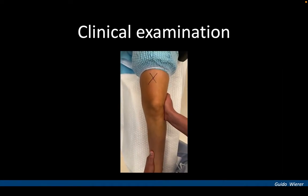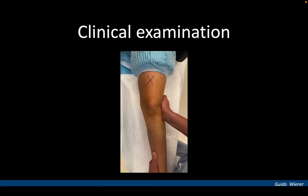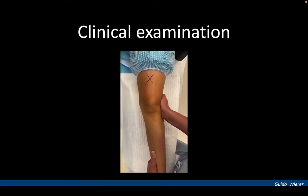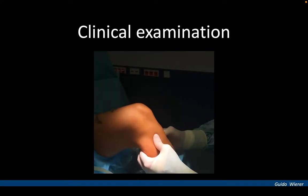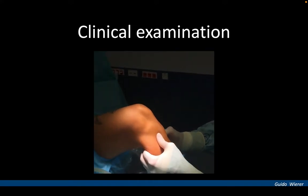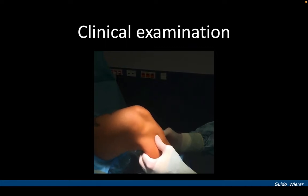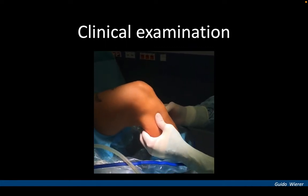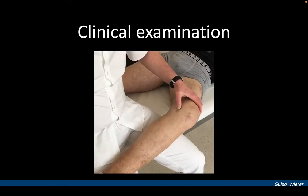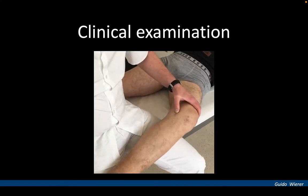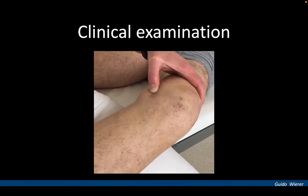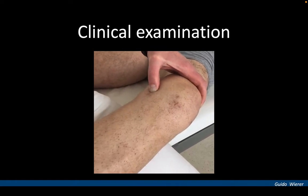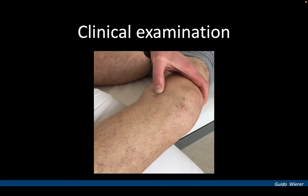In this example, valgus instability is observed in 20 degrees of knee flexion while the knee is stable in extension. The anteromedial draw in 90 degrees of knee flexion shows anteromedial subluxation of the medial tibial plateau in a patient with a combined lesion of the deep and superficial MCL. Another example of chronic anteromedial instability with stress testing at 30 degrees of knee flexion shows anteromedial subluxation of the medial tibial plateau.